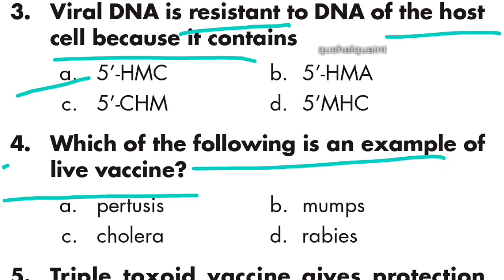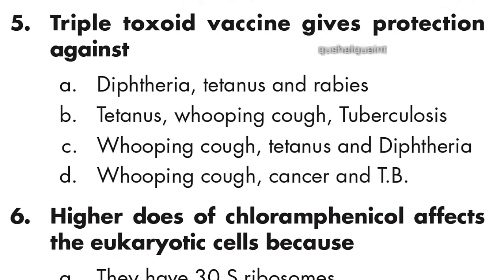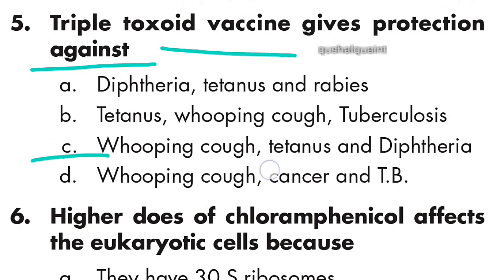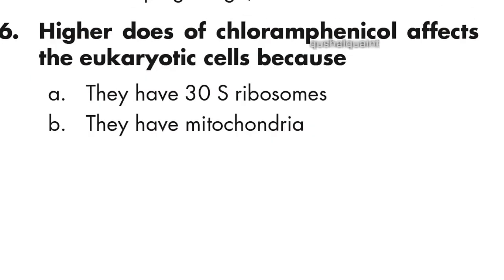Question 4: Which of the following is an example of a live vaccine? Cholera. Option C is right. Question 5: Triple toxoid vaccine gives protection against whooping cough, tetanus, and diphtheria. Option C is right.